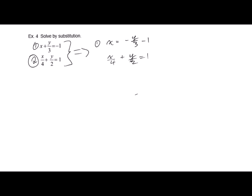So you get x is equal to negative y over 3 minus 1, and x over 4 plus y over 2 equals 1. Now we're going to call that second one equation 2, and then what I need you to do is I need you to sub 1 into equation 2.